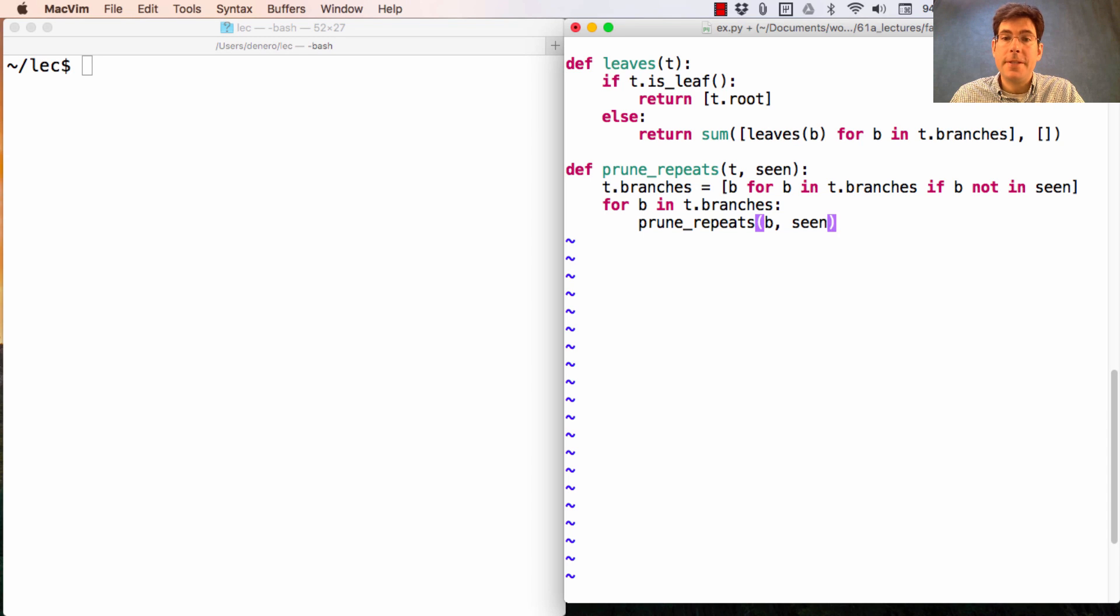Now this code isn't complete because I haven't updated the list of what I've seen. The simplest way to do that is just to append t to seen before I make the recursive calls. So the order of everything is important. First I prune the branches, and then I make my recursive calls. But before I make my recursive calls, I need to update the list of things that I've seen before.